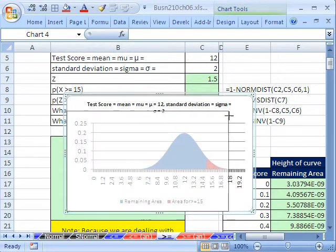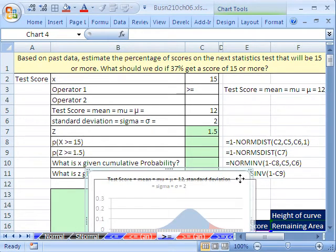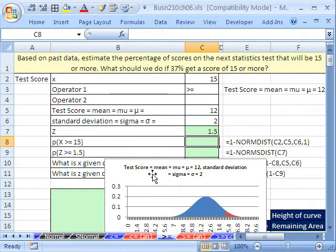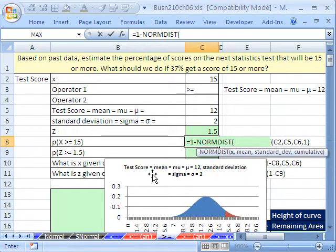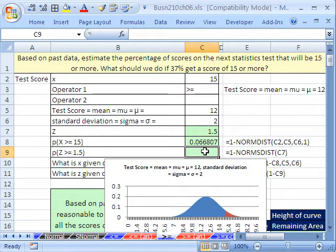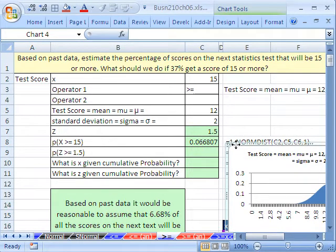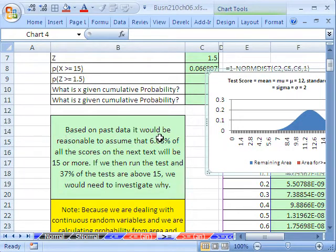Now what happens? Since Excel does cumulative from here all the way up to here, if we put in 15, it's going to give us all that area right there. Really what we want is this area up here. So when we do our NORMDIST, we have to take 1 minus that. Equals 1 minus, and then NORMDIST. We have our x of 15, our mean of 12, our standard deviation. Cumulative, if you want the cumulative, you type 1. Enter. And there it is, 6% from past data. Only 6% of the people get more than 15.